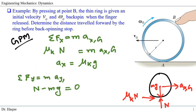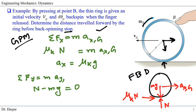We start with ΣFx = ma. Drawing our free body diagram, the forces acting are: weight mg downward and normal force N upward. Since the ring has backspin and is decelerating, the acceleration is opposite to the velocity direction. If velocity is forward, acceleration is backward. If angular velocity is one direction, angular acceleration is opposite, because it is coming to a stop.